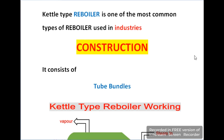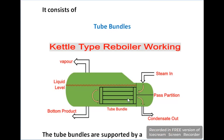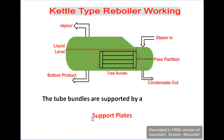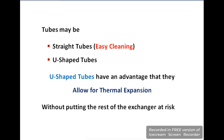Kettle type re-boilers are the most common re-boilers which are mostly used in industries. According to its construction, these consist of tube bundles, which you can see inside the shell. These tube bundles are supported by support plates. The tubes fitted in the kettle re-boiler shell may be straight tubes or U-shaped tubes. If the tubes are U-shaped, they allow for thermal expansion and the heat exchanger will not be at risk.